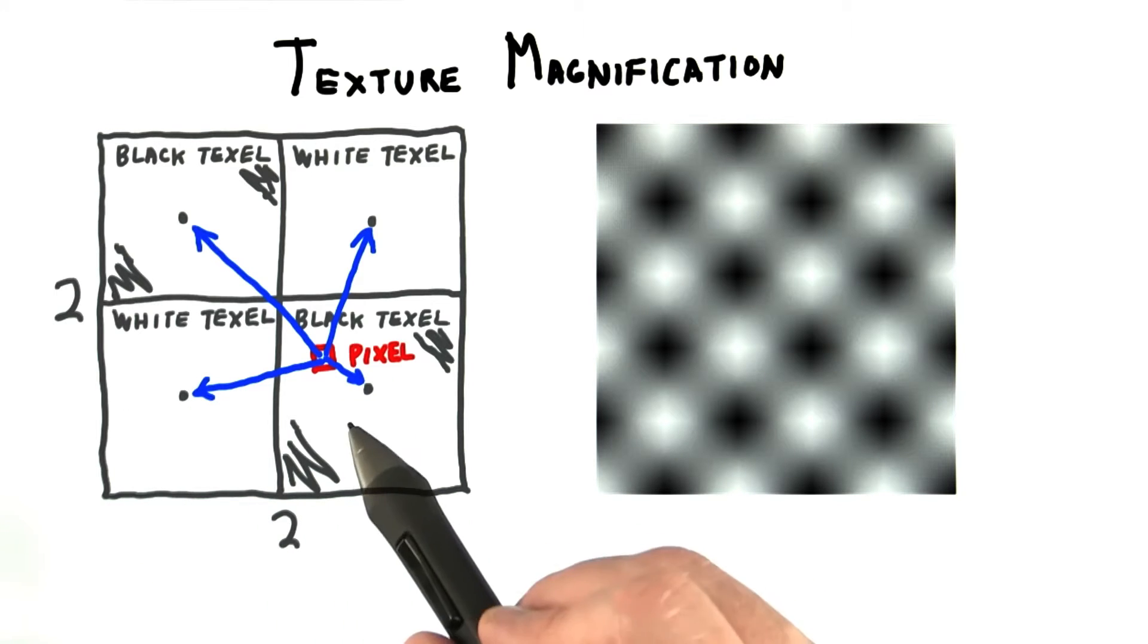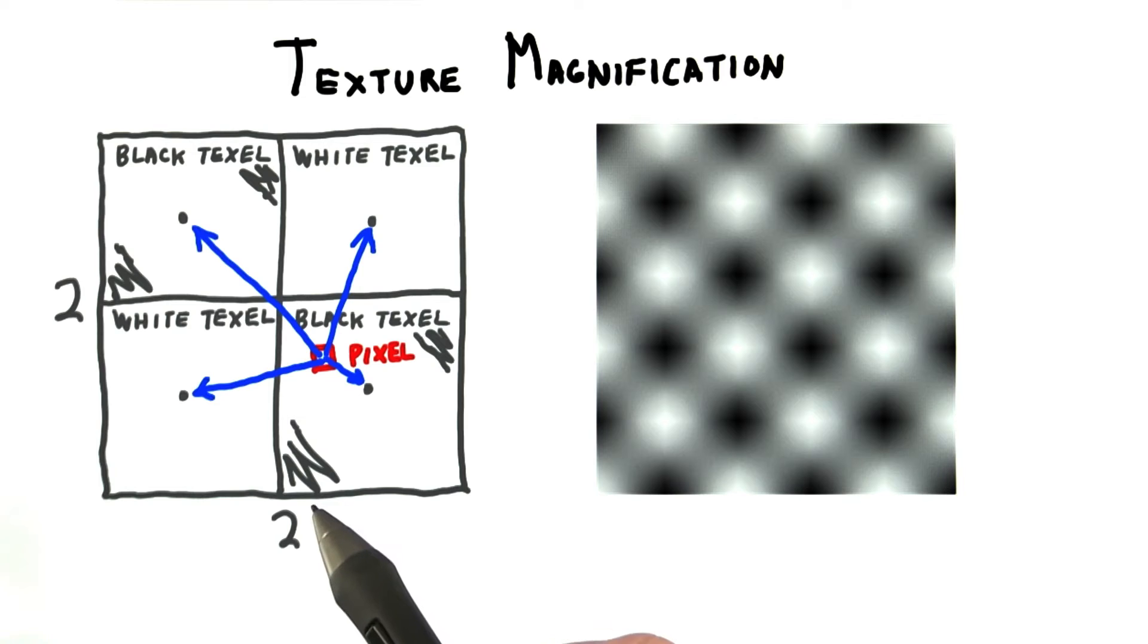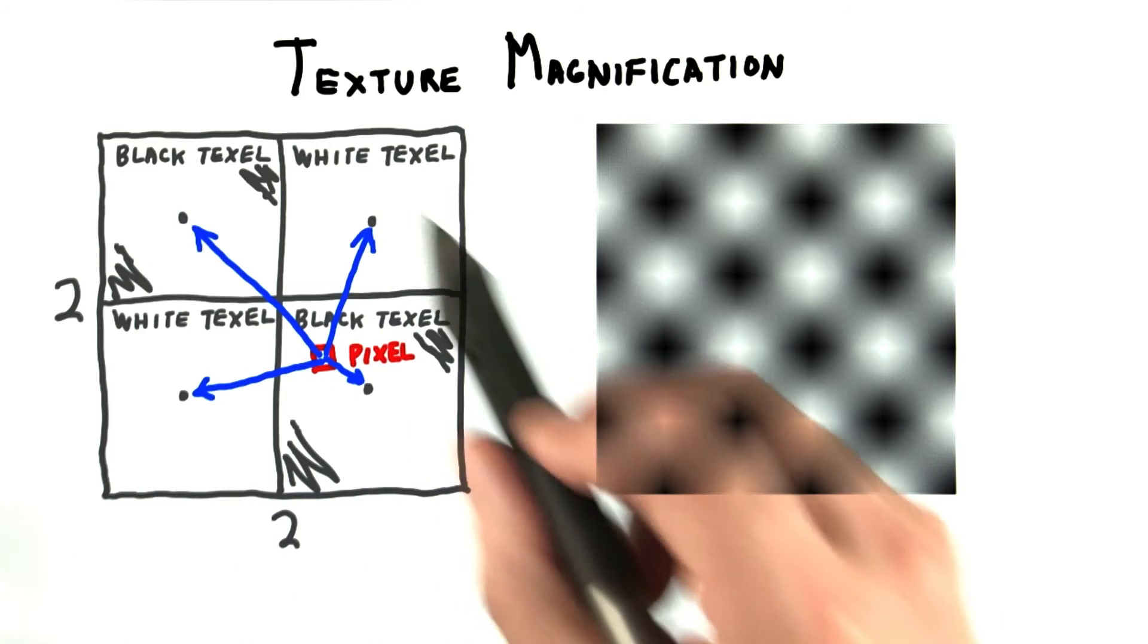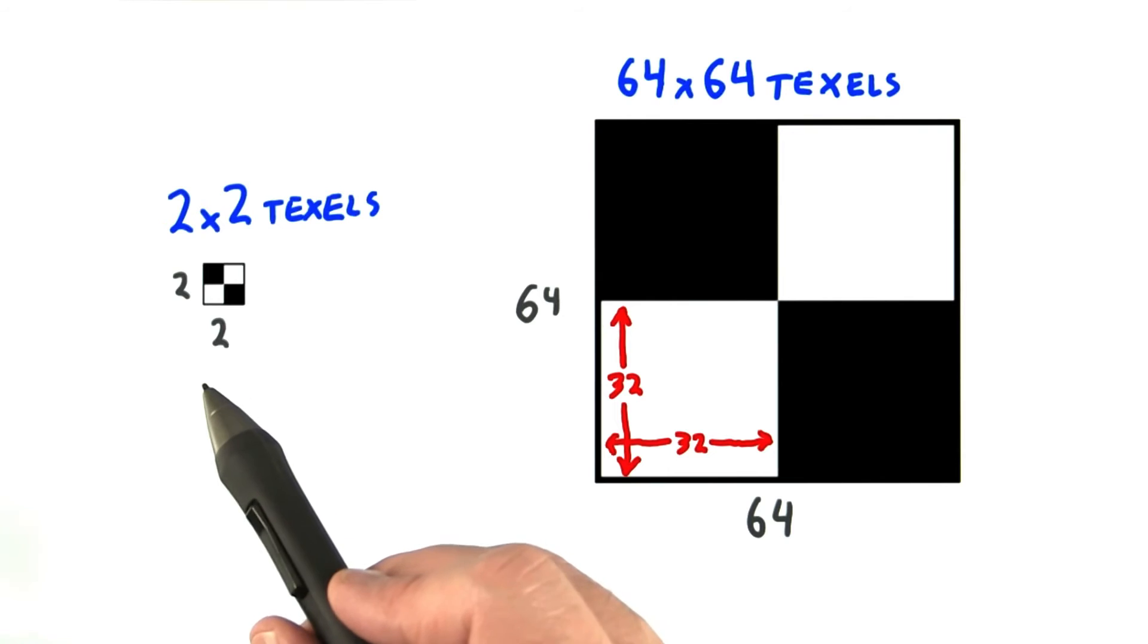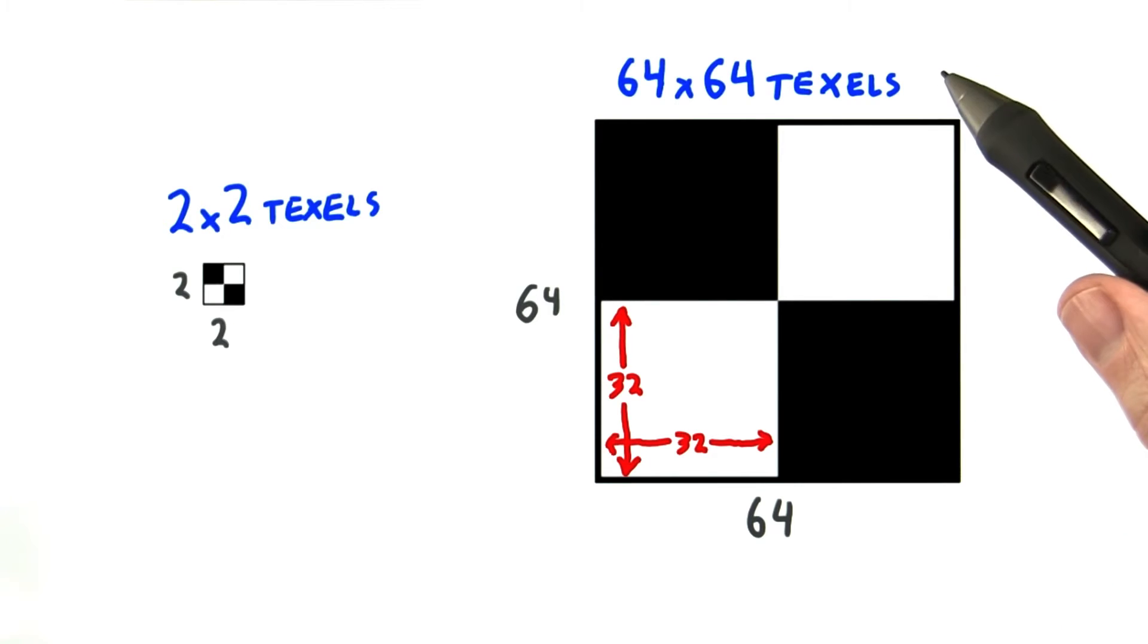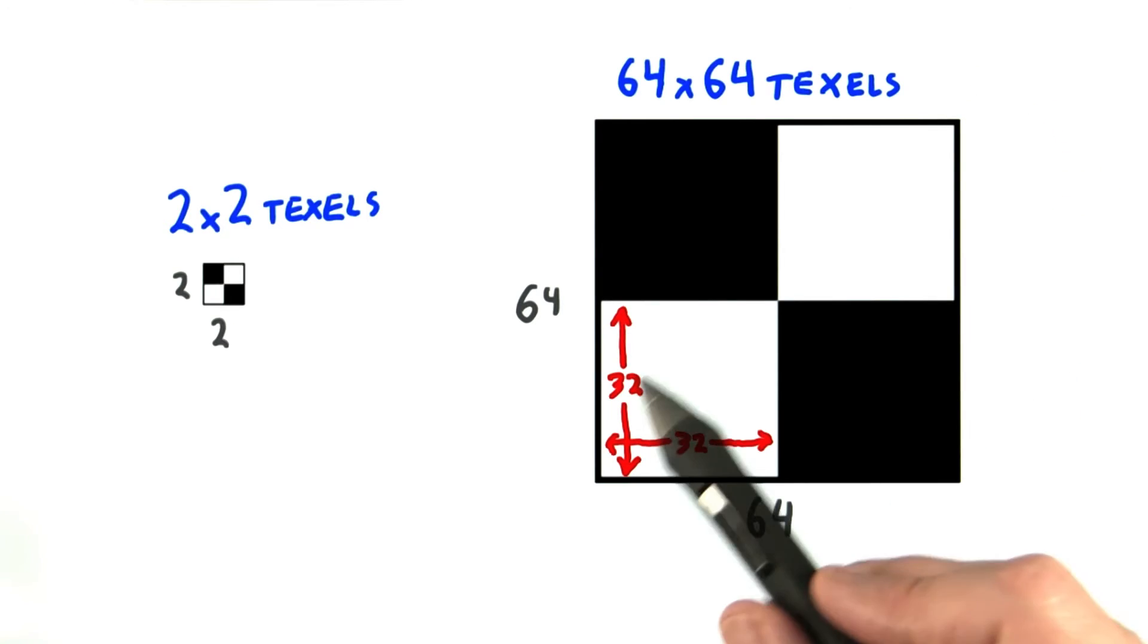The problem here is that one texel covers a huge number of pixels. Let's say we aim to change this ratio to be about one texel per pixel. In other words, say our original 2 by 2 checker pattern covers 100 by 100 pixels. To bring the ratio of texels to pixels to be closer, let's make the 2 by 2 checker pattern be represented by an image texture of 64 by 64 texels, so that each checker square itself covers 32 by 32 texels.